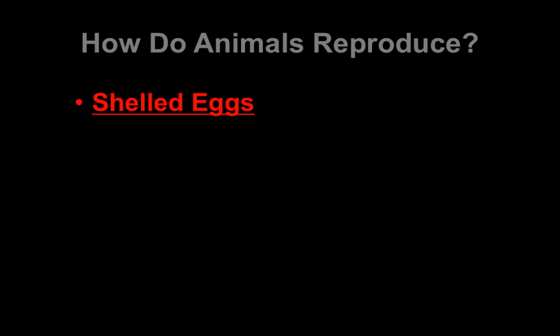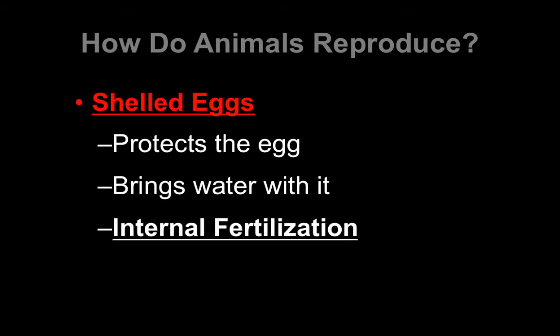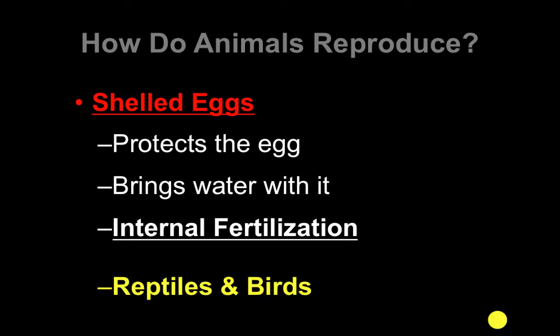Then we have a big advancement for animals in the form of shelled eggs. This is significant because it protects the egg and brings water with it, so now we can have these eggs on land — they don't have to be in the water. But because we have this shell around it, you can't just externally fertilize it, because the sperm won't be able to get through the shell. So the egg has to be fertilized before the shell goes on, which means it has to be fertilized inside the mother. This is the case in reptiles and birds.